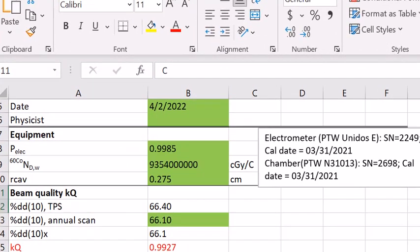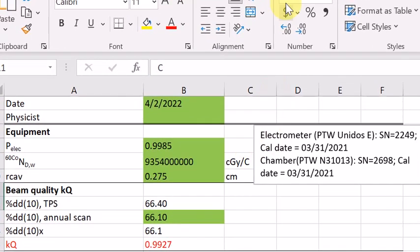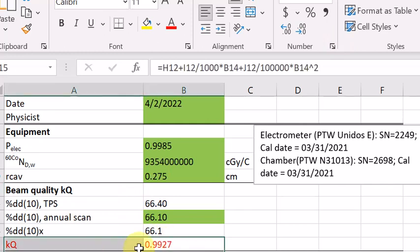In our case, the KQ value for a 6MV photon beam is 0.9927. That's the example that I want to show you for a photon calculation. I will briefly introduce how to obtain KQ factor for electron beam in the next video lecture.